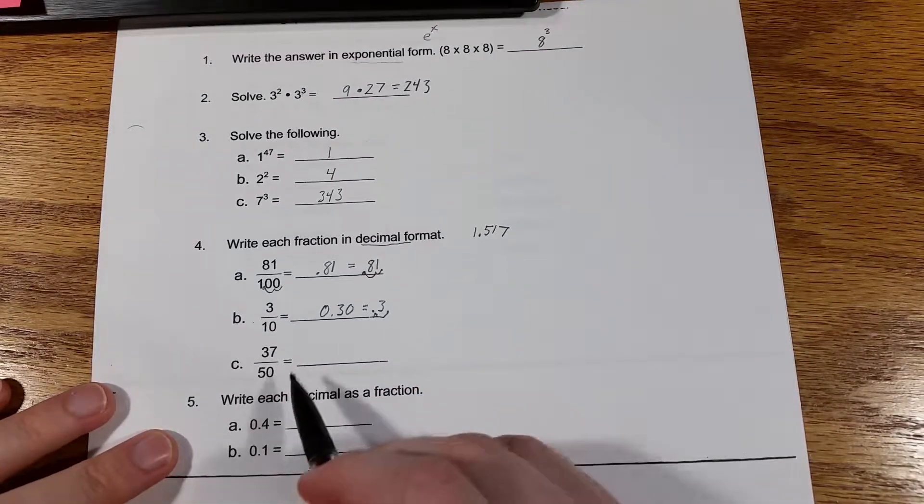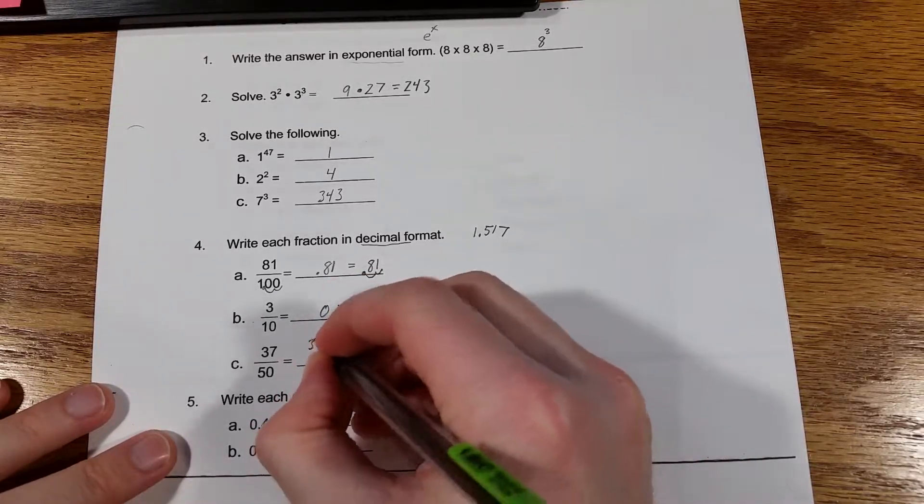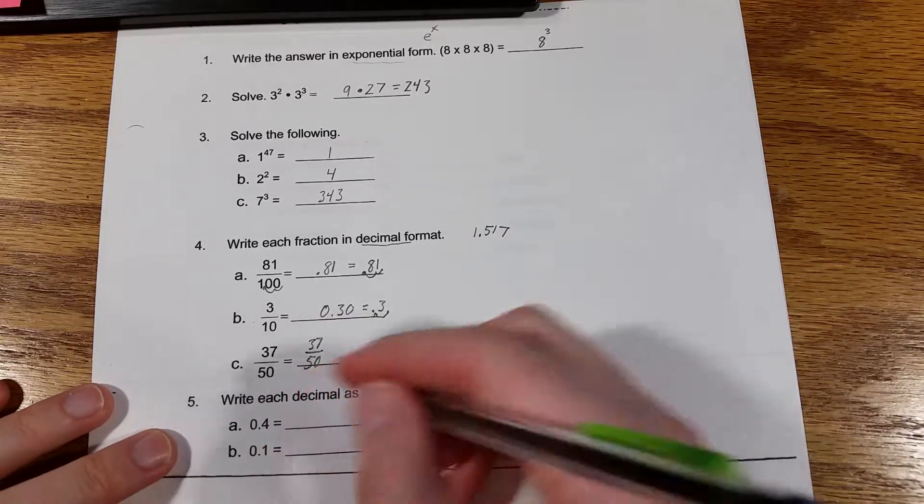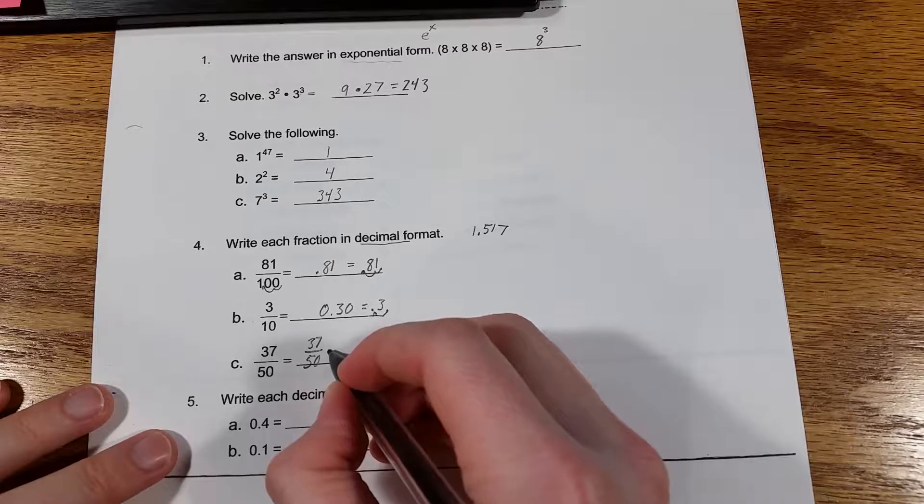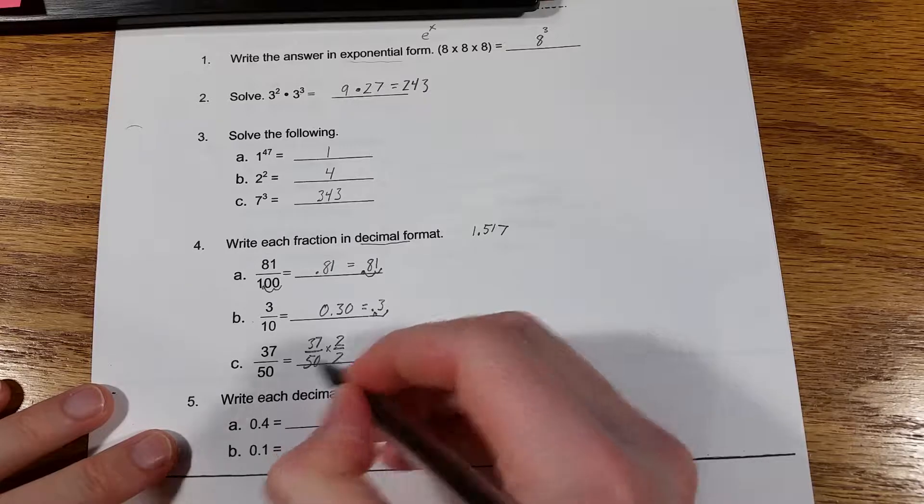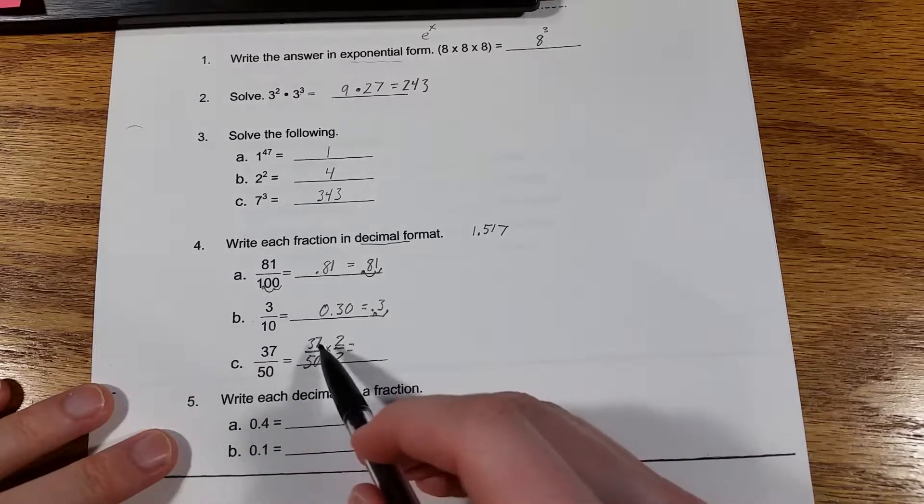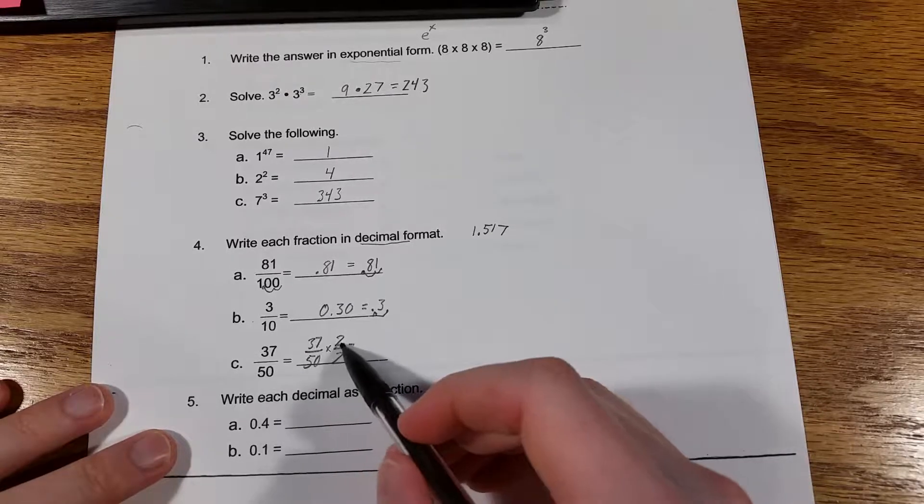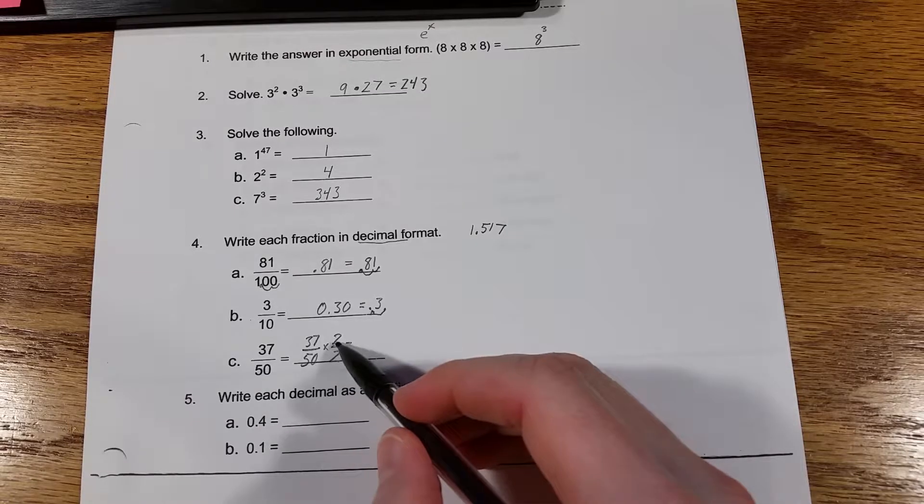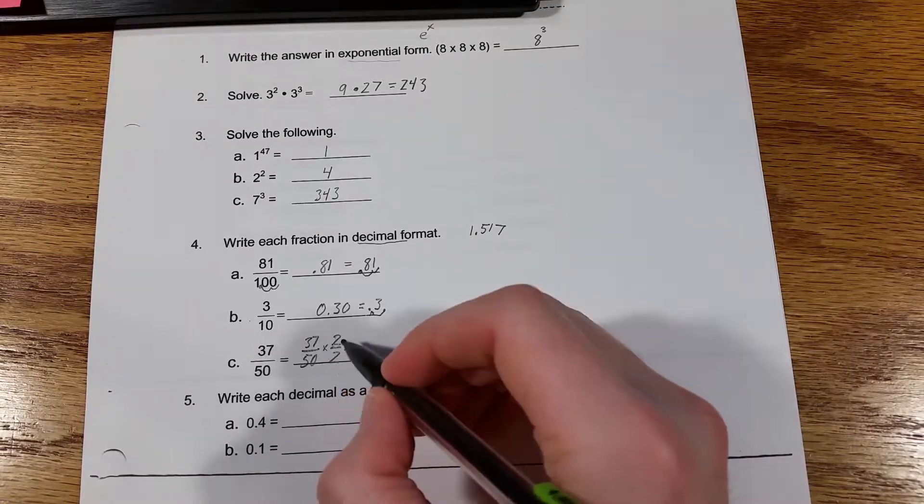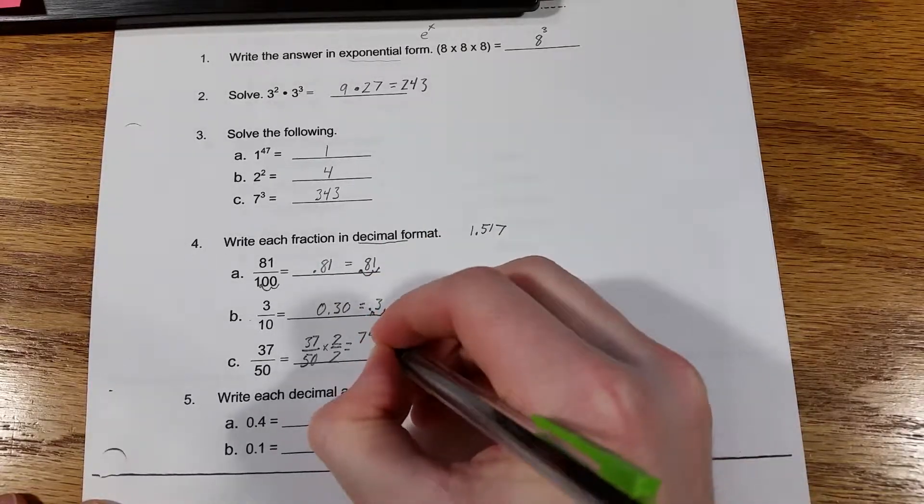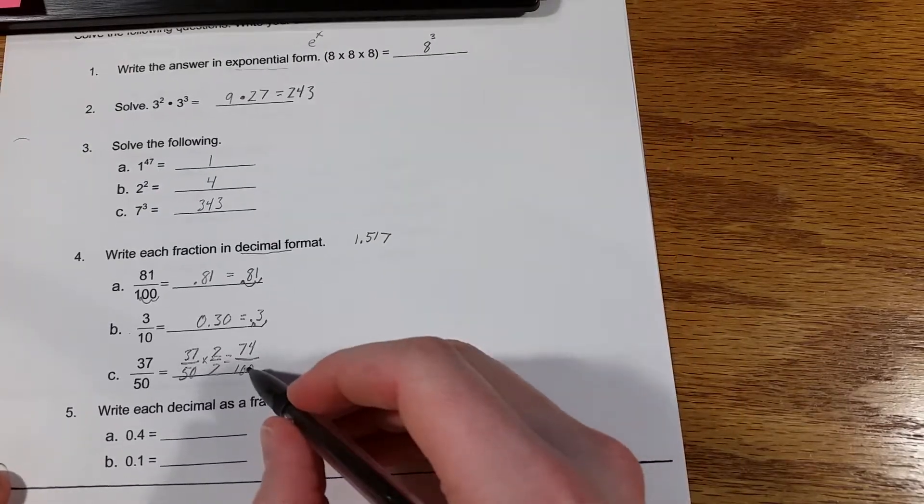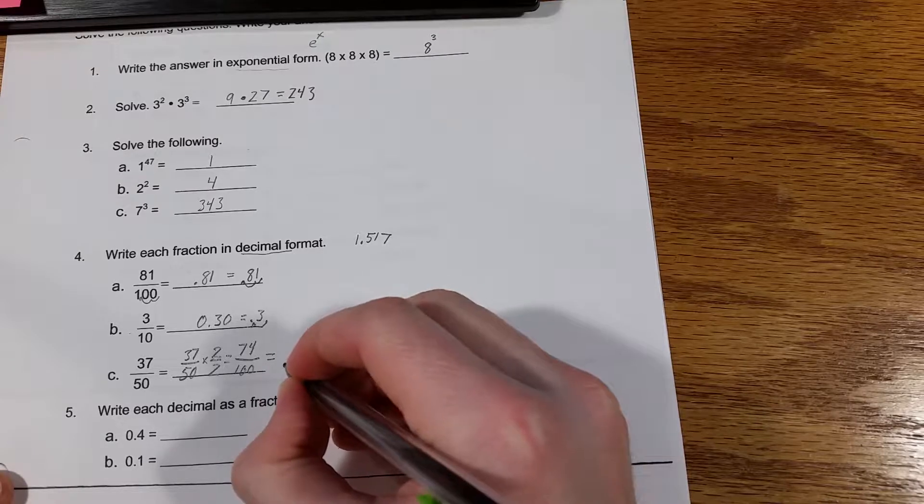37 divided by 50, we could type that into the calculator and get it in decimal form, or I'll show you something else you could do. 37 divided by 50. Now if you multiply anything by 1, you get the same thing you started with. So a trick would be to multiply this by 2 divided by 2. So this 2 divided by 2 is just 1, so we're just multiplying it by 1. So if we look at the top, 37 times 2, that should be 74 divided by 50 times 2 is 100. So now that we have it in this form, base 100 is a little bit easier, so that would just be 0.74.